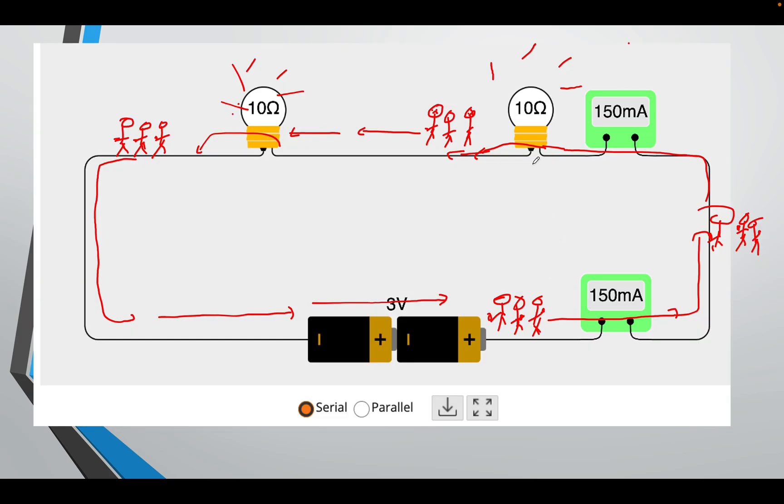And this is what electrons do when they're passing through a circuit. You have the batteries, you have the electrons going. And you can see that the current here, let's say 150 milliamps. The same electrons are travelling, they're still travelling, still travelling. The same electrons, 150 milliamps.